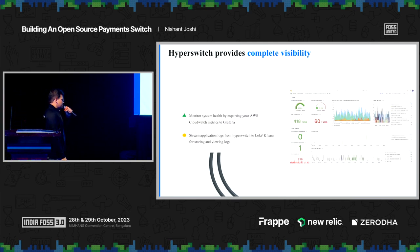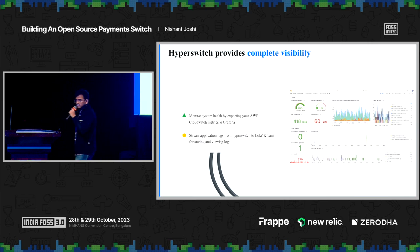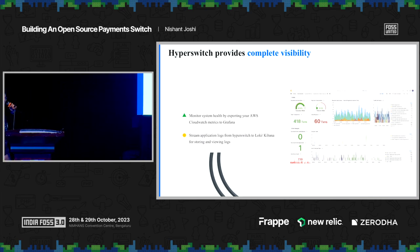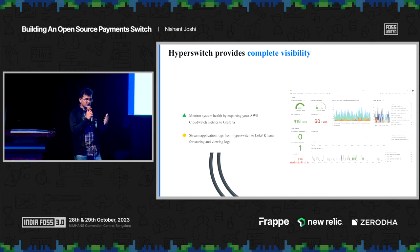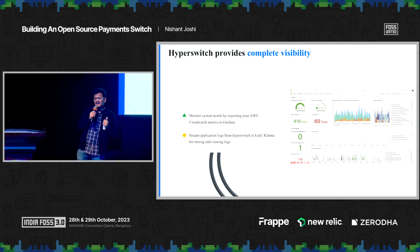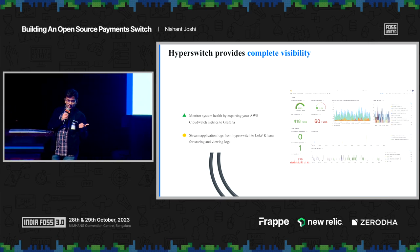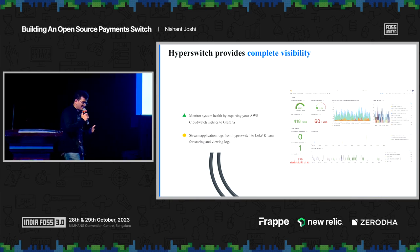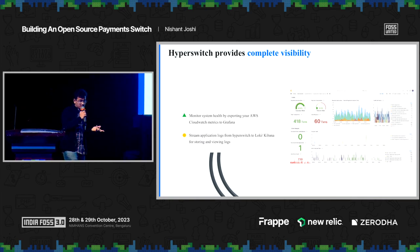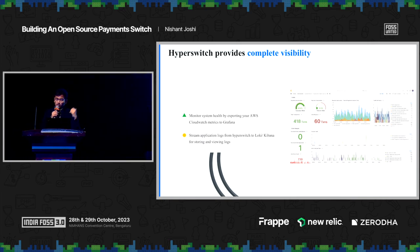Moving forward — since this is a payment system, we should have some observability, because payments are quite critical. To help us get a better look at how the system is working internally, we relied heavily on OpenTelemetry, Prometheus, and the Grafana stack to help us log better, get metrics, and get much more insight into how the system is working internally. And this is also open source — you can just go to our repo and check it out.